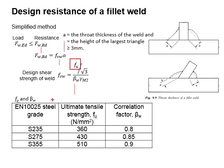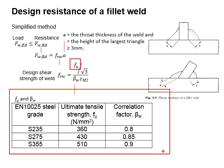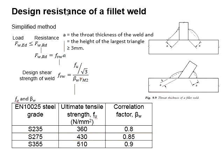The FU here refers to the table here for the grade 275, FU equals to 430. The factor beta W refers to S275 is equal to 0.85. The partial factor of safety, gamma M2, is equal to 1.25.